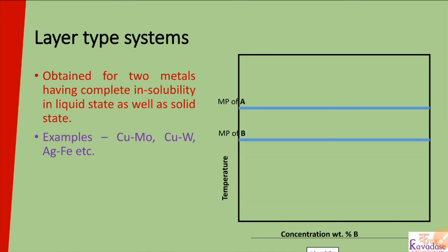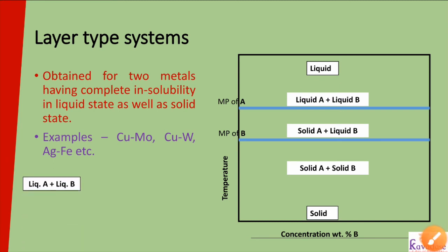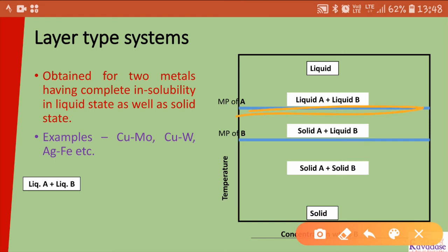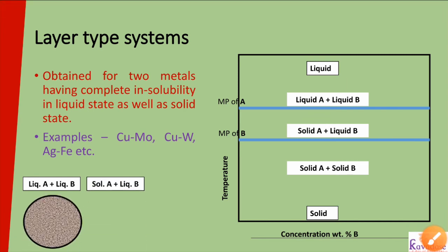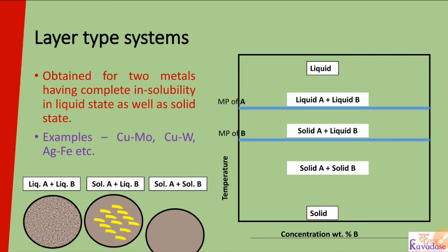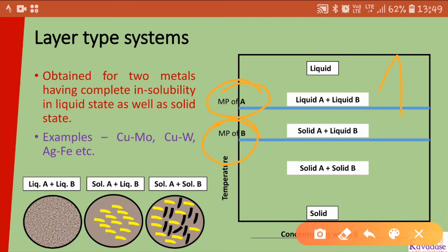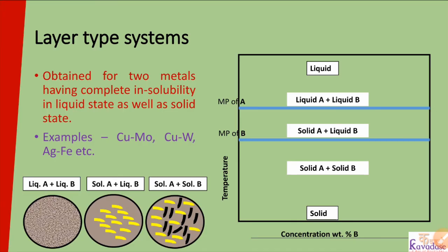In the layer type system, metals are insoluble in liquid as well as in solid state. The diagram shows the liquidus line above which all liquid is present, and the solidus line below which all solid is present. You can see regions of liquid A plus liquid B, solid A plus liquid B, and solid A plus solid B. We get layers of solid A and solid B because of their different melting points — metal A solidifies first, then metal B solidifies.